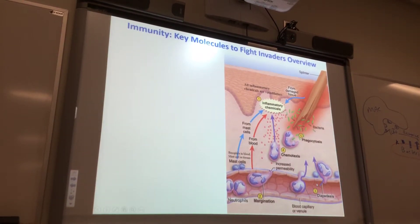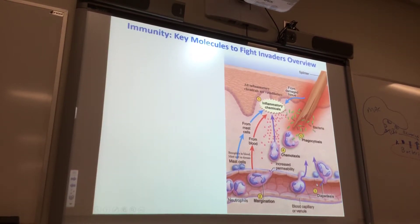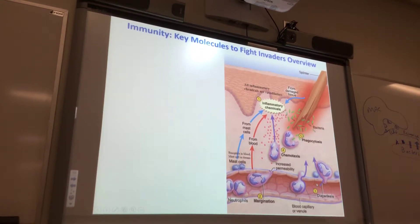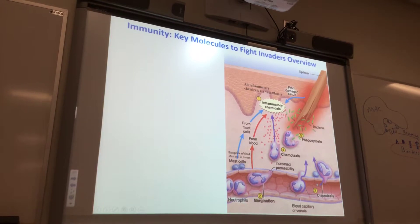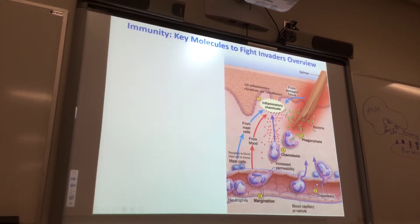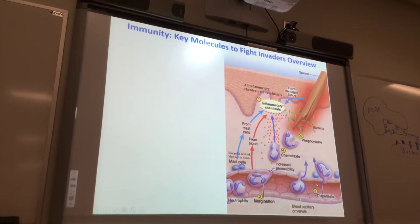So here's the splinter — it comes into your skin. Here's the green things are bacteria, and they are releasing all sorts of chemicals. They also come in with their PAMPs. So you can see right here, immediately if there's a phagocyte in the area, they could start phagocytosing the bacteria.